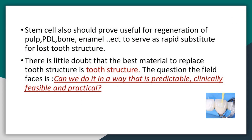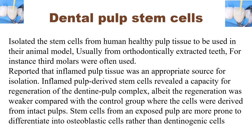Dental pulp stem cells are isolated from human healthy pulp tissue, typically from orthodontically extracted teeth such as third molars. Studies reported that inflamed pulp tissue was also an appropriate source. Inflamed pulp-derived stem cells revealed a capacity for regeneration of the dentine-pulp complex, albeit weaker compared to cells derived from intact pulps. Stem cells from an exposed pulp are more prone to differentiate into osteoblastic cells rather than dentinogenic cells.